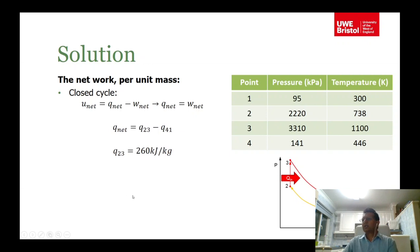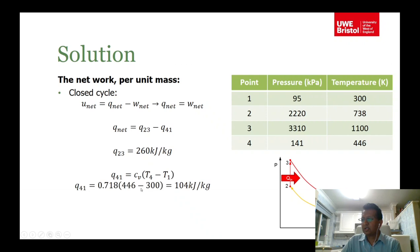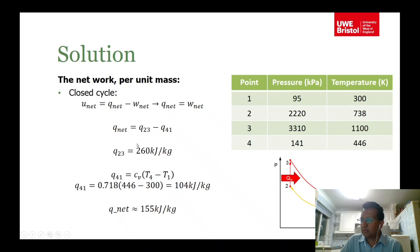Q_net = Q23 - Q41, where Q41 = cv(T4 - T1). Q41 is approximately 104 kJ/kg and Q_net is approximately 155 kJ/kg. Thermal efficiency is therefore about 59%, which you can verify using the formula eta = 1 - 1/(r_v^(gamma-1)) with r_v = 9.5 and gamma = 1.4, giving the same value.